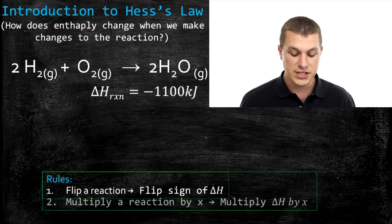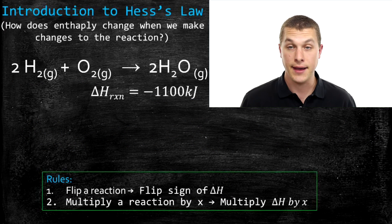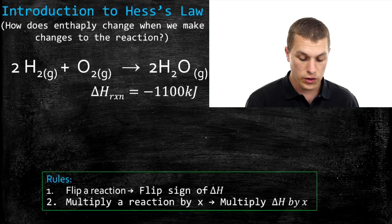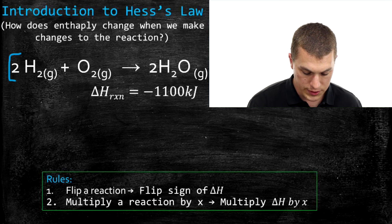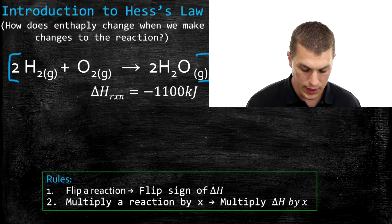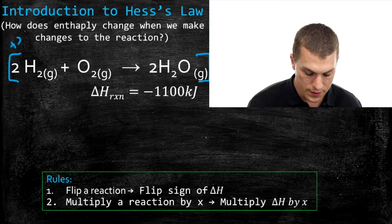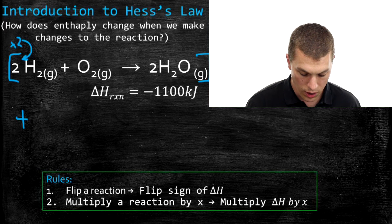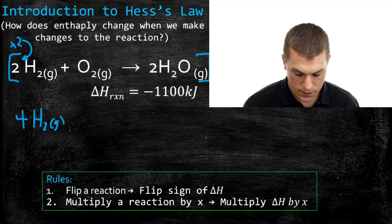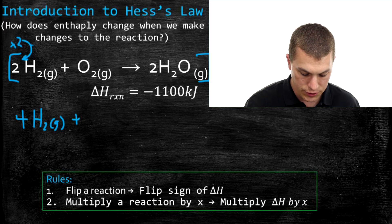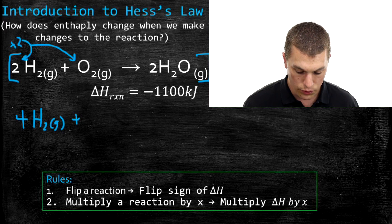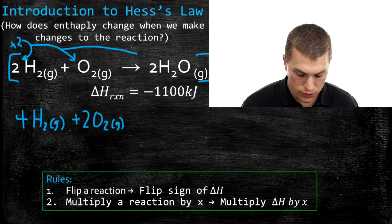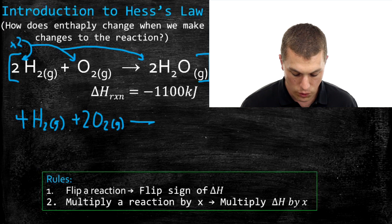Rule two tells us that if we multiply our reaction by any number x, all we have to do is multiply delta H by that same number x. We can take our whole chemical reaction and multiply it by two. That multiplies the two in front of hydrogen by two, giving us four hydrogen gas. We do the same for oxygen — there's a one in front, so that gives us two oxygen gas. And finally, we do that same thing to the water, giving us four waters.